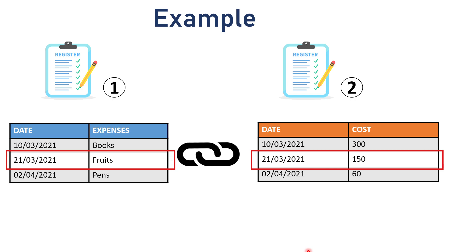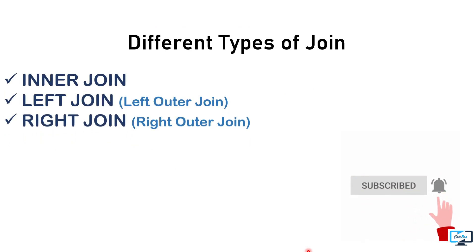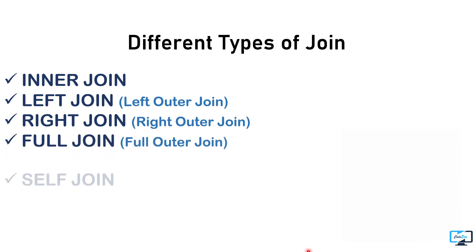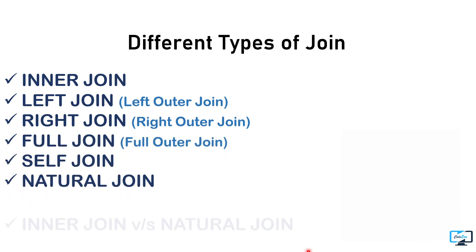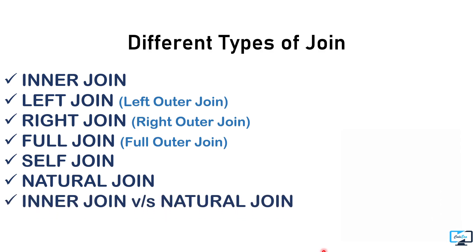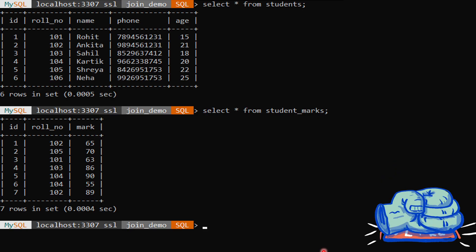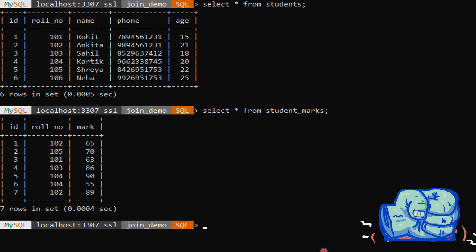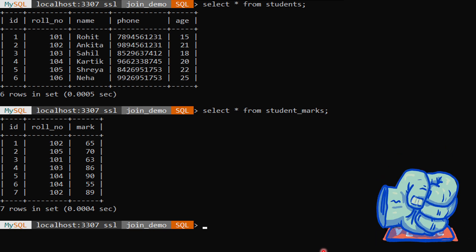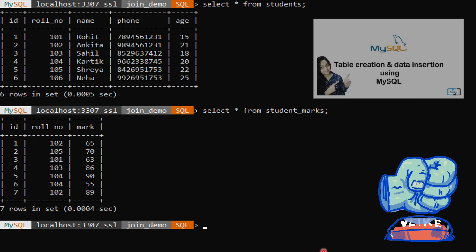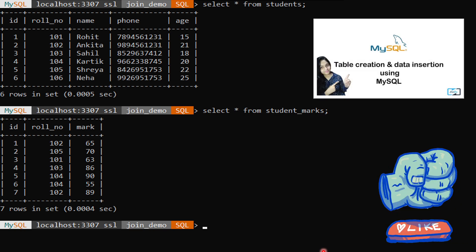Next we will understand different types of joins, which are inner join, left join, right join, full join, self join, and natural join. Last I will also discuss a difference between inner join and natural join. In this complete video we will consider two tables: student and student marks table, using MySQL as the database with some data already fed into them.